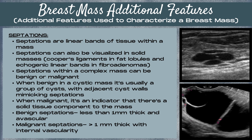Benign septations are less than one millimeter thick and they're avascular, while malignant type septations are greater than one millimeter thick and they display internal vascularity within the septation.